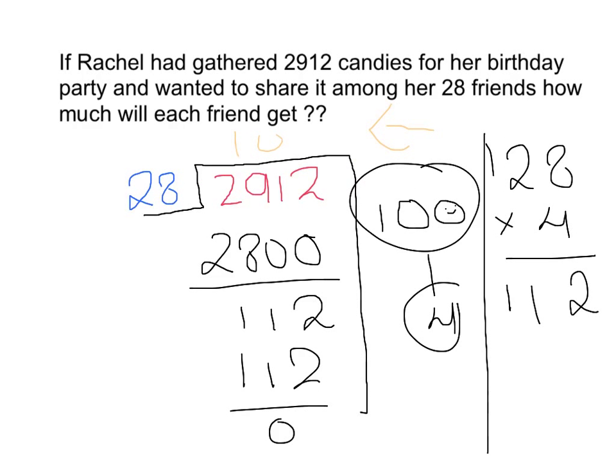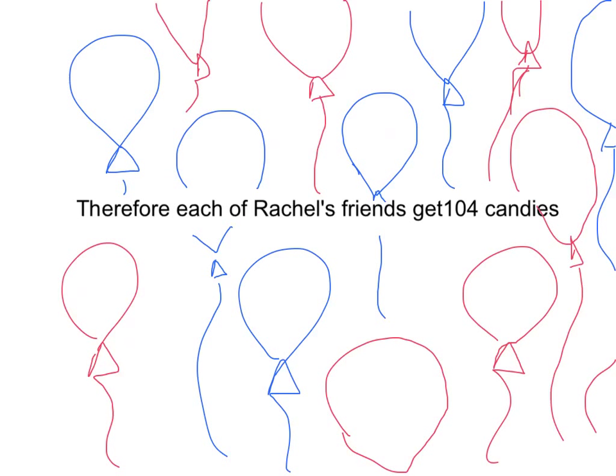My answer is 104. Therefore, each of Rachel's friends gets 104 candies and there will be no leftovers. Thank you and I hope you liked my video.